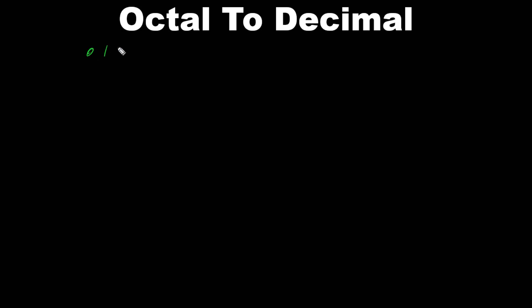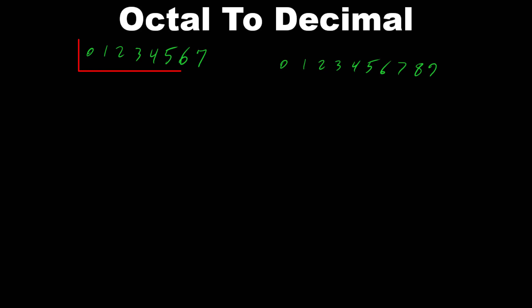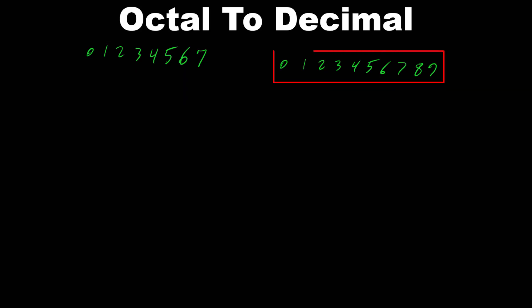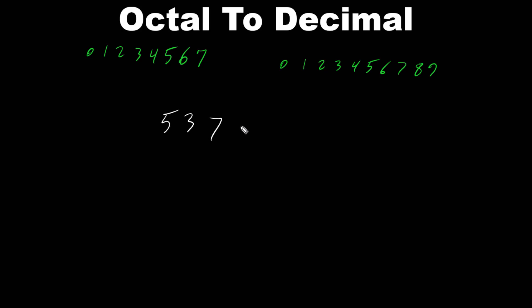For every octal number we have 3 bits. The octal digits are 0, 1, 2, 3, 4, 5, 6, 7, and the decimal digits are 0, 1, 2, 3, 4, 5, 6, 7, 8, 9. So in octal we can see 0 to 7 — a total of 8. In decimal we can see 0 to 9 — a total of 10.